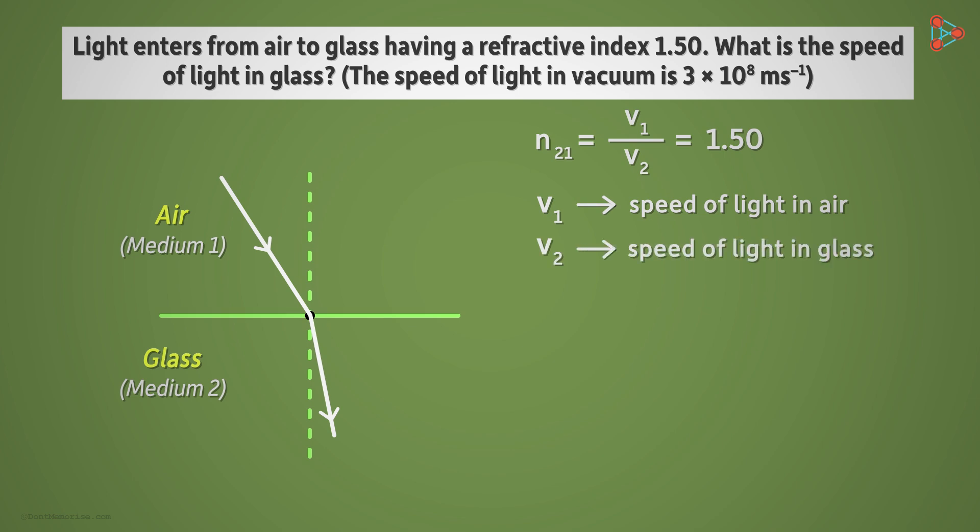But we aren't given any of the two values. We want to find out the speed of light in glass. And for that, we need the speed of light in air.